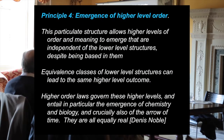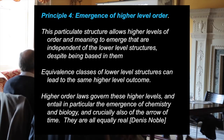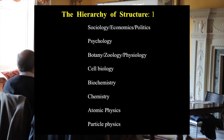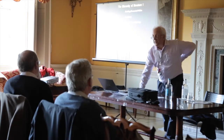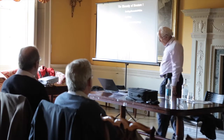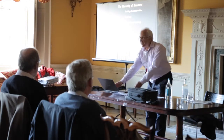What you have is higher-level structures, and there are equivalence classes of lower-level structures which all give you the same higher-level kind of behaviour. Higher-level norms govern these higher levels, and entail in particular the emergence of chemistry, biology, and crucially the arrow of time. The position I take together with Dennis Noble is that all of these levels are equally real. Particle physics underlies atomic physics, underlies chemistry, underlies biochemistry, cell biology, psychology, sociology. Is the table real? I think Eddington is saying there are two tables there, and they are both real — the table we see and the table made of atoms. Each level is real in its own right.